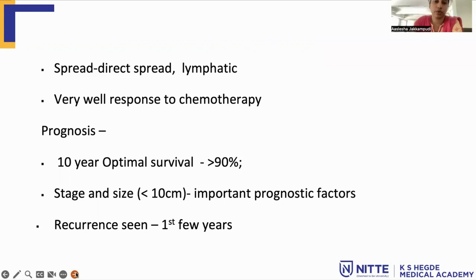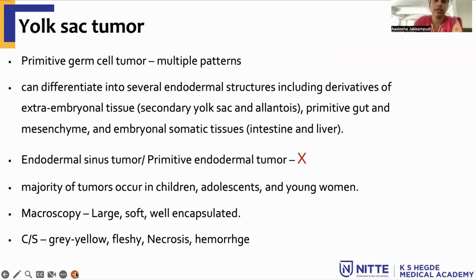Coming to yolk sac tumor, which is a primitive germ cell tumor having various histologic patterns. This germ cell can differentiate into several endodermal structures including derivatives of extra-embryonal tissue like yolk sac and allantois, or primitive gut mesenchyme or somatic tissue like intestine or liver. Previously, it was also known as primitive endodermal tumor or endodermal sinus tumor, but these terminologies are not used now. Majority of tumors are seen in children or adolescents.